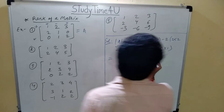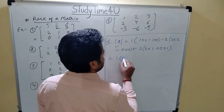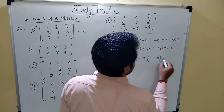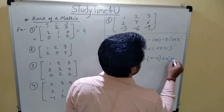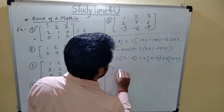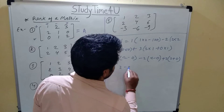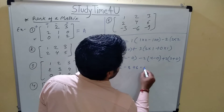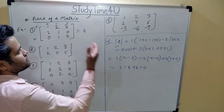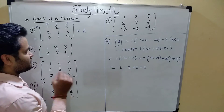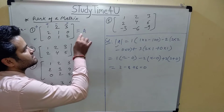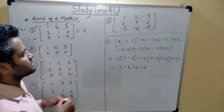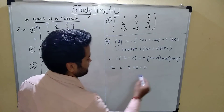Solving it: 1 times (2 minus 0), minus 2 times (4 minus 0), plus 3 times (2 plus 0). We are getting 2 minus 8 plus 6, so its value is 0. The outermost minor is the square matrix itself. The determinant of this 3×3 matrix comes to 0.